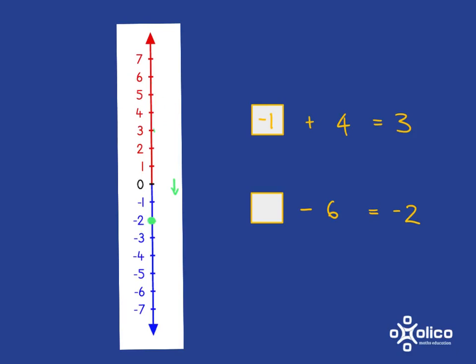So, let's go back up the 6 steps. That's 2 steps to 0, and 4 more steps to make 6 steps in total. So, we must have started at 4, come down 6 steps, to end up at negative 2.